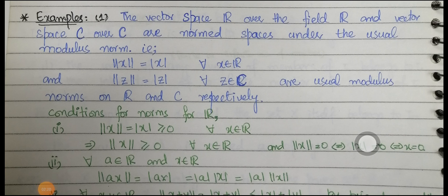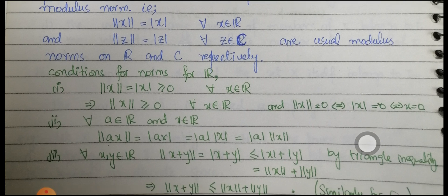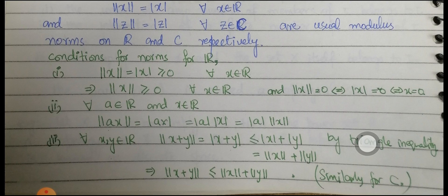Example 1: The vector spaces ℝ over ℝ and ℂ over ℂ are normed spaces under the usual modulus norm: ‖x‖ = |x| for x ∈ ℝ, and ‖z‖ = |z| for z ∈ ℂ. For the first condition, ‖x‖ = |x| ≥ 0 for all x ∈ ℝ, and ‖x‖ = 0 if and only if x = 0, so condition 1 is satisfied.